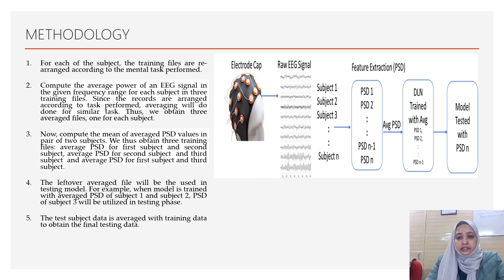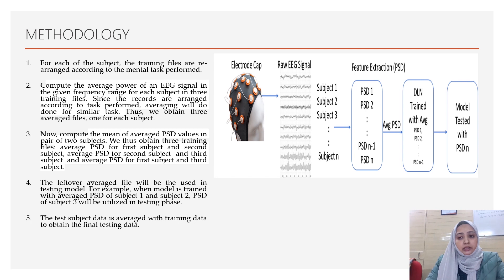This raw EEG signal has to go through certain pre-processing steps before any machine learning algorithm can work on it. In this case, the raw EEG signal is converted into power spectrum density, and features are extracted through a deep neural network. These extracted features are then stored in a way that can be fed into a deep neural network.